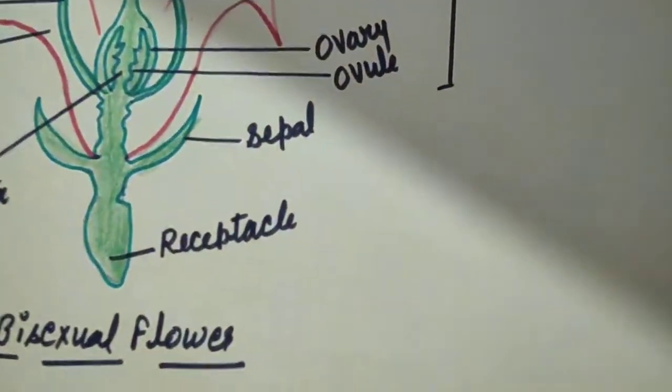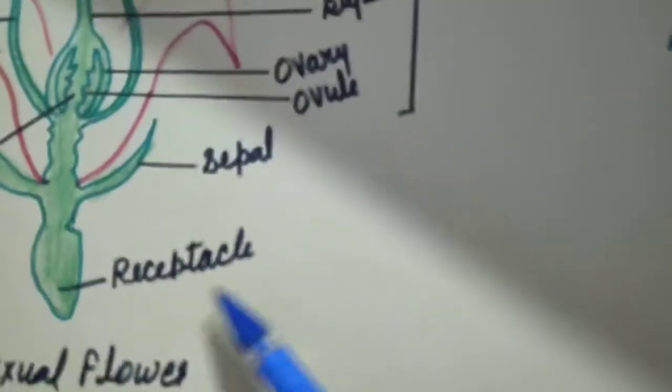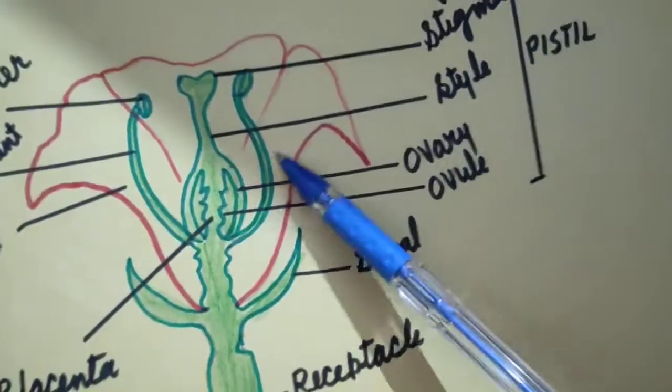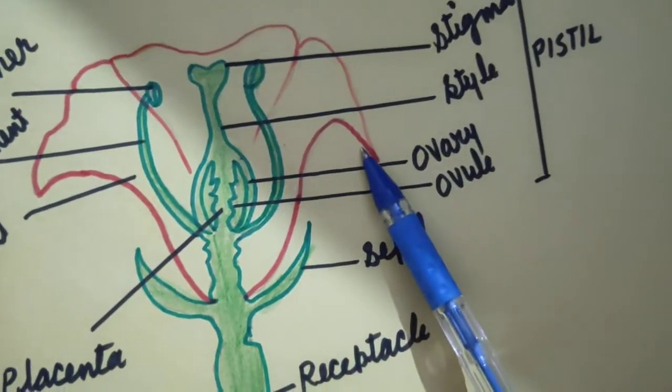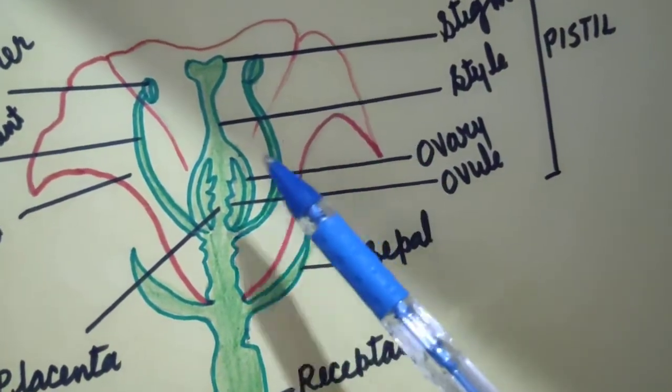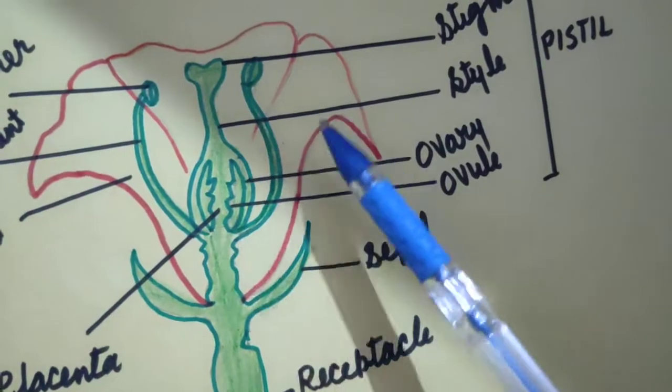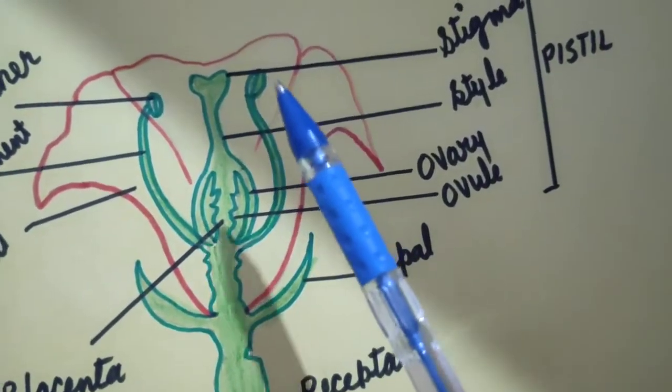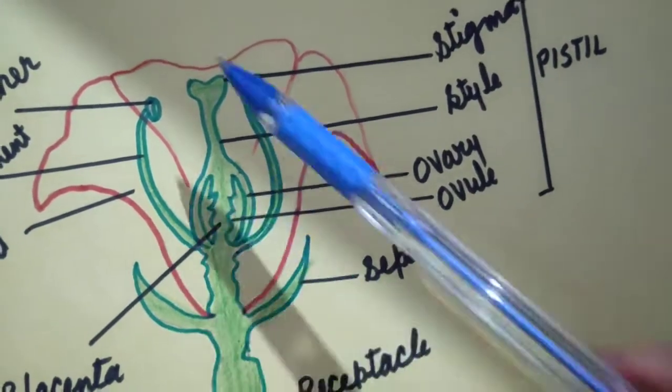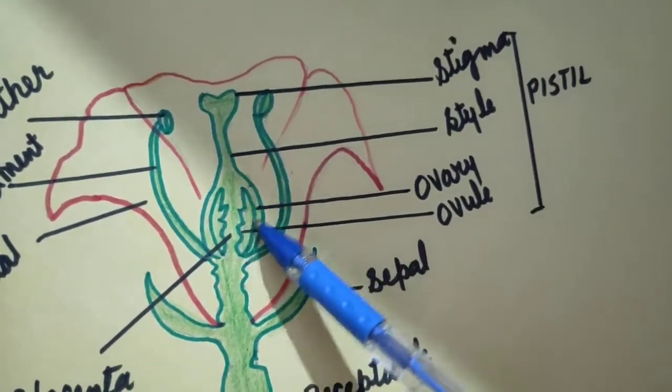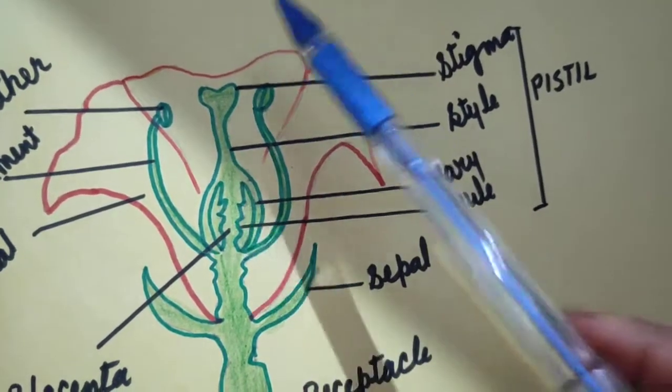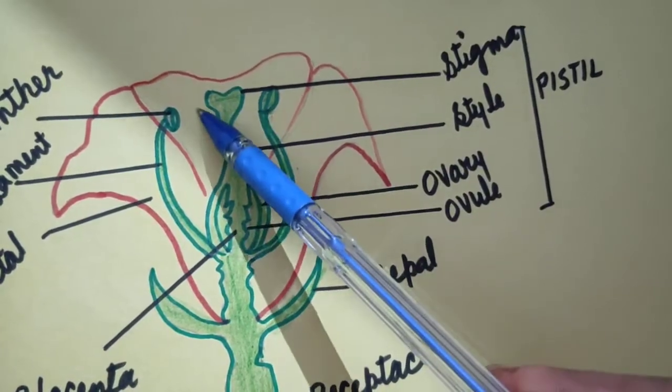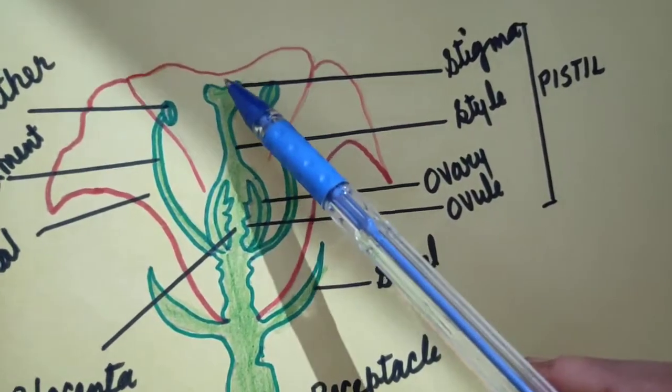Next structure, gynoecium. Gynoecium is also known as pistil. And each pistil composed of one or more carpels. Each carpel consists of three parts: stigma, style and ovary. Stigma is a knob-like part, and it may be divided into two or more lobes.